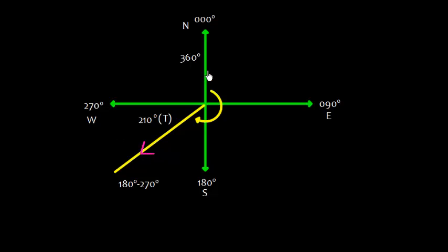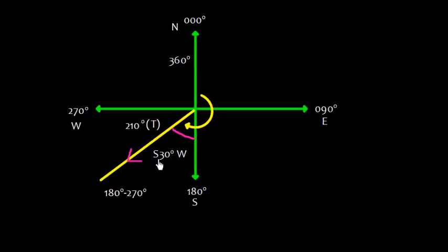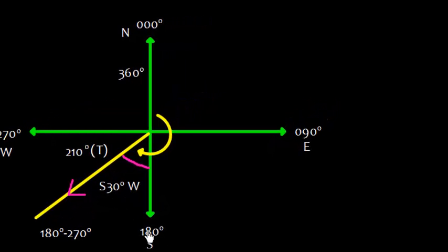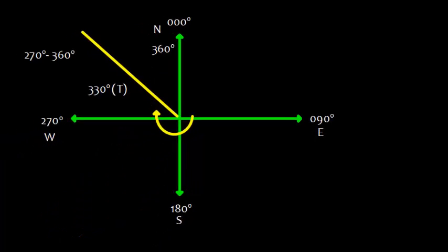Now let's take another example where the course is 210° true — in the southwest quadrant. The total angle is 210°, and since 180° is south, this remaining angle is 30 degrees. Because 180 plus 30 equals 210, we can represent this course in the quadrantal system as S30°W.